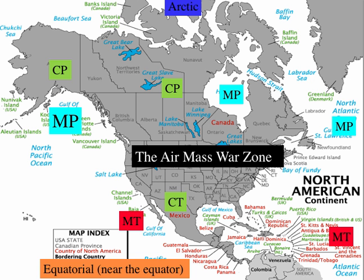I just created a little map here to show the different types. Here's polar continental — dry and cool year-round. Polar maritime forms out here — cool and wet. On the other side, also polar maritime — cool and wet. Versus tropical maritime — wet and warm year-round. And tropical continental forms over the desert areas — warm and dry.